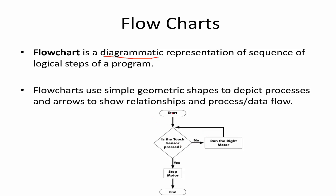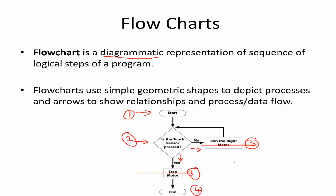For example, if you see this picture, first of all you have to start. After starting, you follow the arrow to a diamond symbol where the question is: 'Is the touch sensor pressed?' That is the second item to check. From there, you can go in one of two directions. If the touch sensor is not pressed, you run the right-hand motor. If the answer is yes, you stop the motor and at the end, stop the program. This is a basic flowchart to achieve a specific goal.